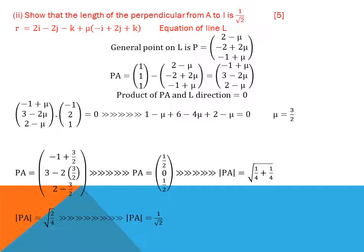Part two: show that the perpendicular distance from point A to line L is 1/√2. Find the general point P on L as (2−μ, −2+2μ, −1+μ). The direction vector PA from P to A is (−1+μ, 3−2μ, 2−μ). For the perpendicular, PA · direction of L = 0. Taking the dot product with L's direction (−1, 2, 1) and setting equal to zero gives μ = 3/2.